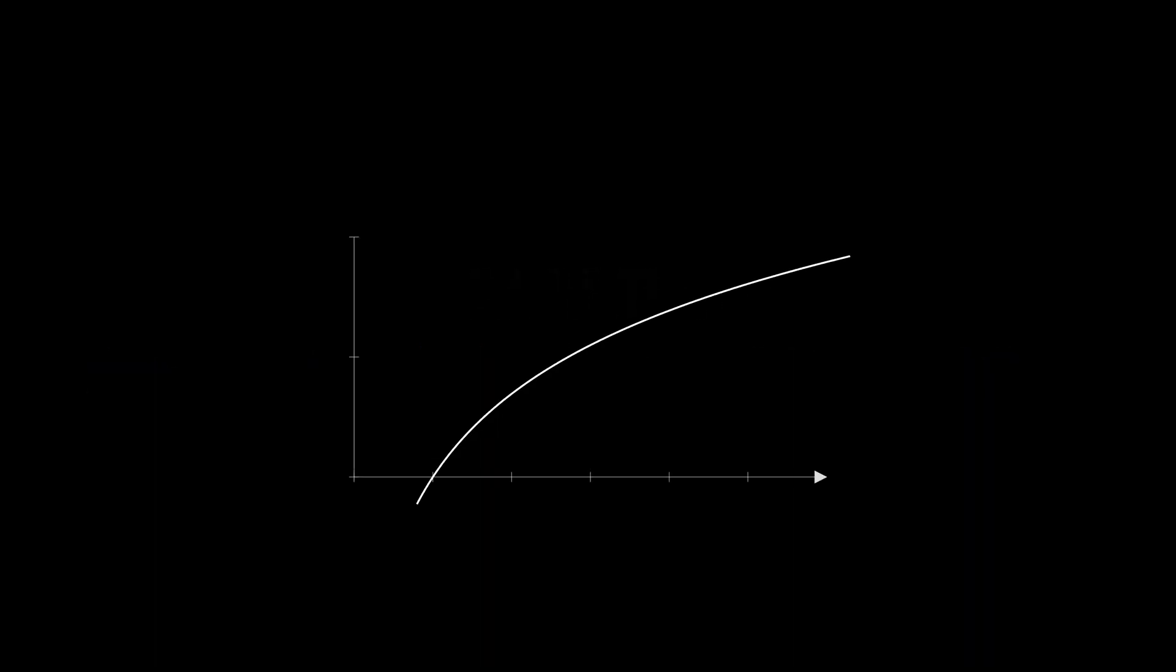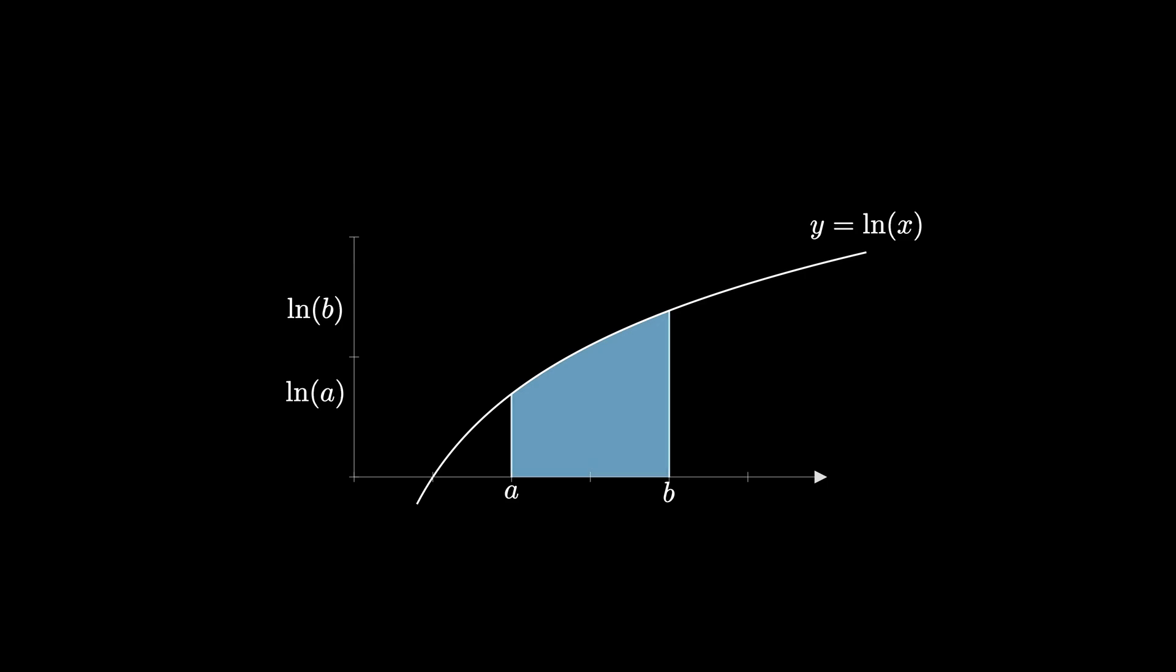Let's plot the graph of the natural log function so that y equals ln of x. Now let's consider two inputs a and b and plug them into the function resulting in natural log of a and natural log of b respectively. Suppose we want to find the area between the curve and the x-axis over the interval ab.